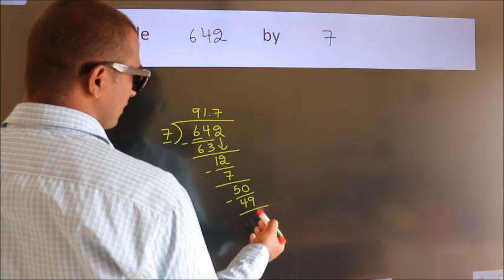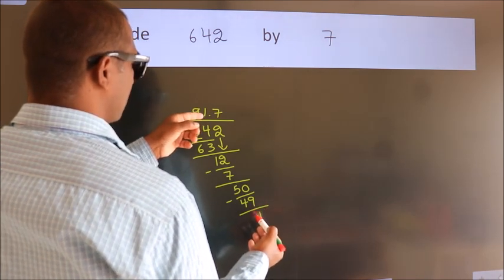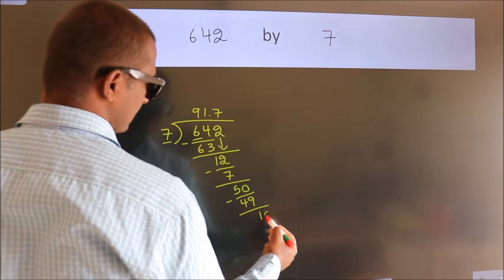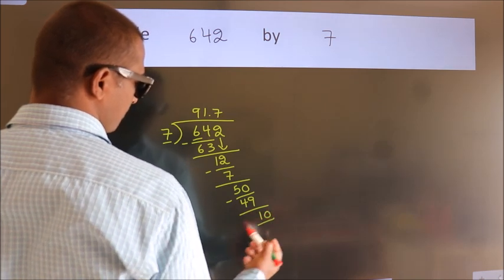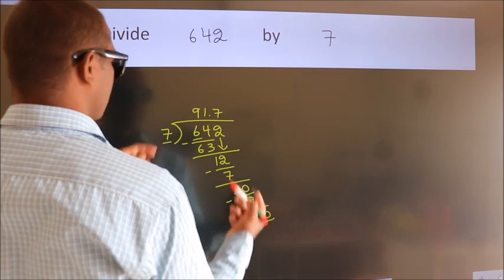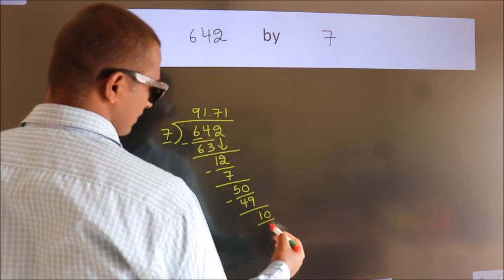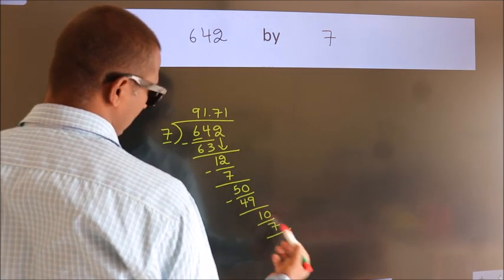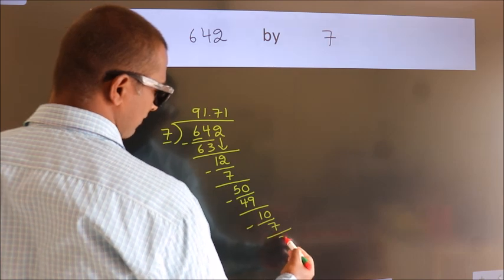After this, we already have the decimal. So directly take 0. So 10. A number close to 10 in the 7 times table is 7×1, which is 7. Now we subtract. We get 3.